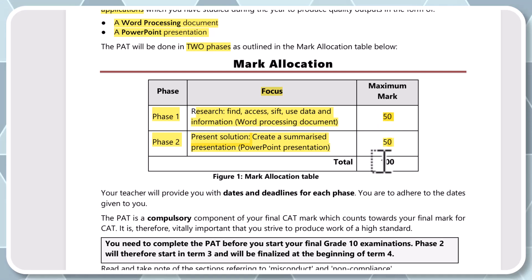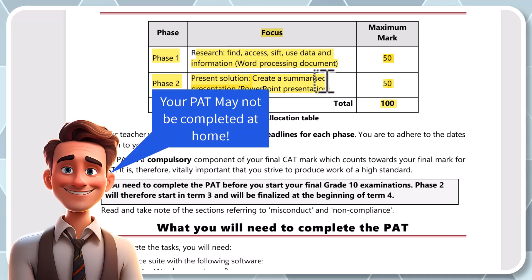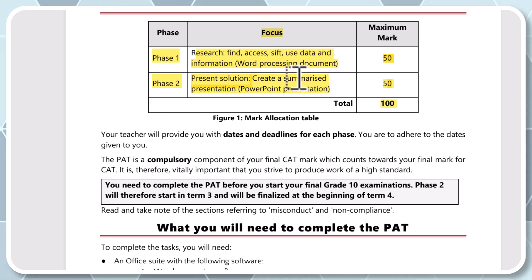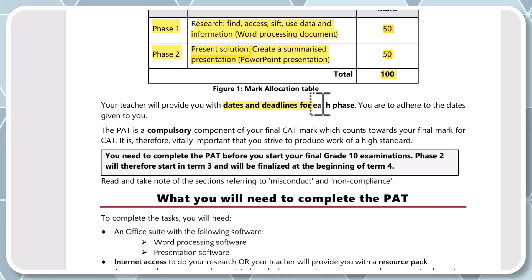So the total of the PAT is 100 marks. Now, importantly, you cannot take the PAT home and work on it there — you have to work on it at school, alone, and preferably in exam conditions. You may not be talking to friends. You can get help from a friend but you need to fill in forms for that. Your teacher will provide you with dates and deadlines for each phase.